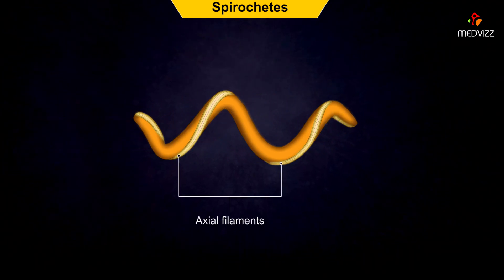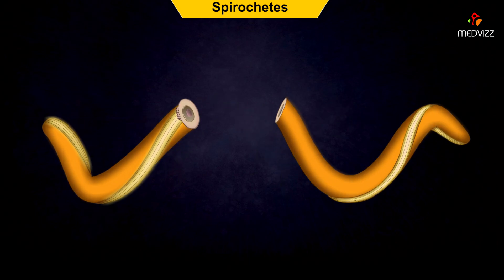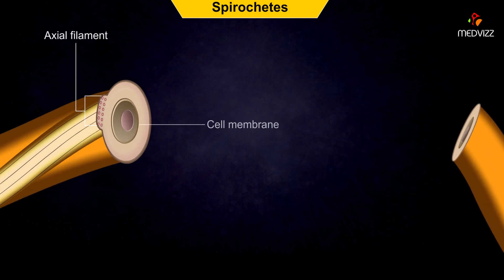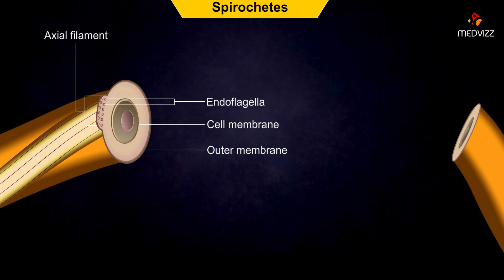Spirochetes have an axial filament that lies between the outer membrane and the cell membrane. The axial filament winds around the outer edge of the cell and is made up of a bundle of modified flagella called endoflagella.